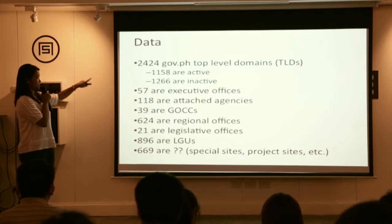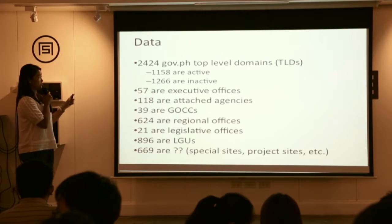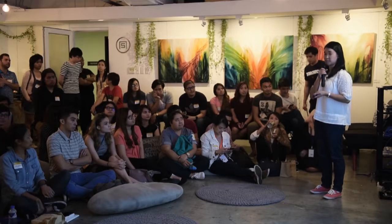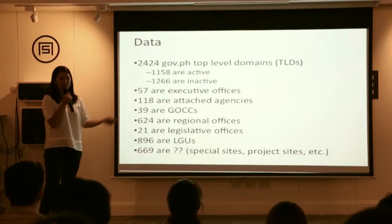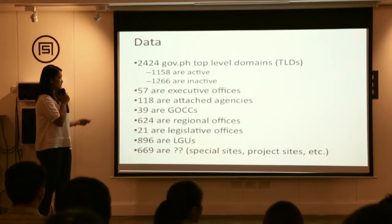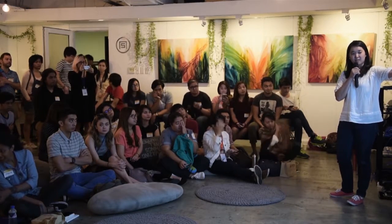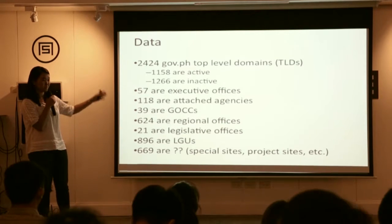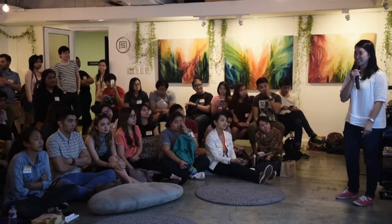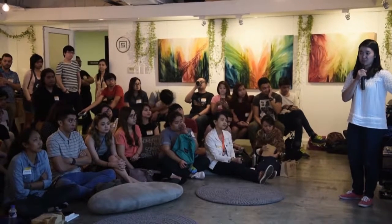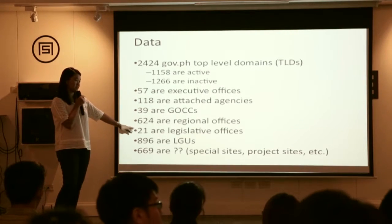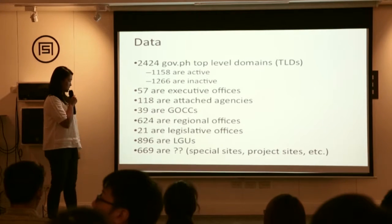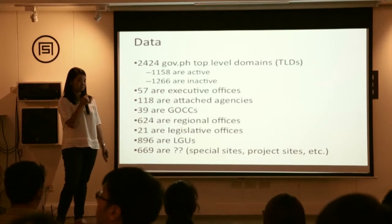There are 2,424 top-level domains. 1,158 of them are active; 1,266 are inactive but still part of the registry. 57 are executive offices — departments or those reporting directly to the president. 188 are attached agencies. 39 are government-owned and controlled corporations. 624 are regional offices. 21 are legislative offices and judiciary units like Congress and the House of Representatives. 896 are local government units, and 669 top-level domains are special or project sites.